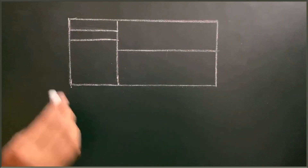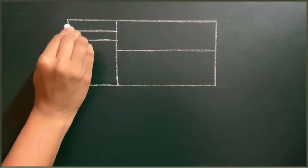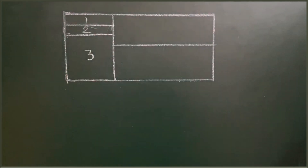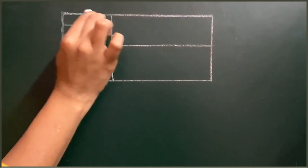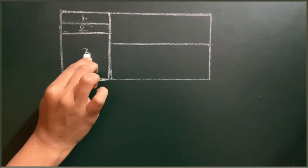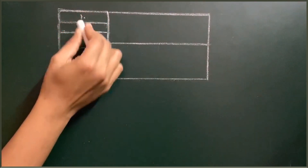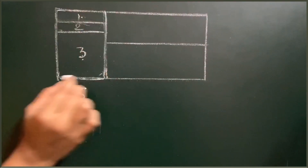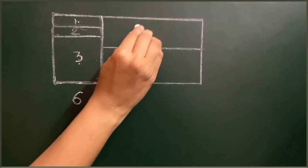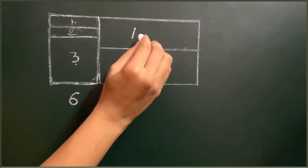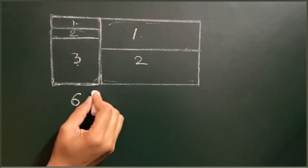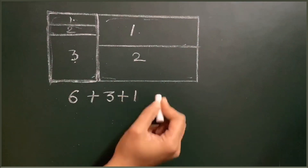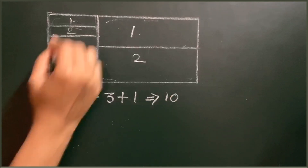Number of rectangles in this figure. Here this one is 1, 2, 3. To count the number of rectangles in this part we have to add 1 plus 2 plus 3, which is 6 rectangles in this part. Next, on the right side part it's 1, 2, and 1 plus 2 is 3. Then the whole rectangle, so we add that plus 1. Total it's 10 rectangles in this figure.